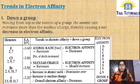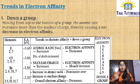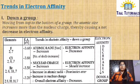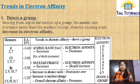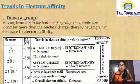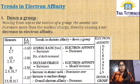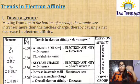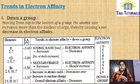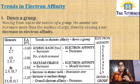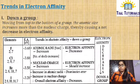Trends in electron affinity: down a group, from top to bottom of the periodic table, the atomic size is increasing. This is inversely proportional to electron affinity — when there is an increase in atomic size, there is a decrease in electron affinity. Moving from top to bottom of a group, the atomic size increases more than the nuclear charge, thereby causing a net decrease in electron affinity.